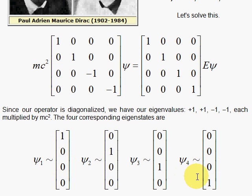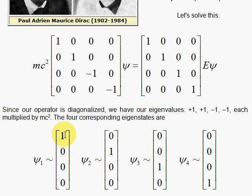These first two have eigenvalues plus 1, and these last two have eigenvalues negative 1. When you put in the constants, the energy eigenvalue for the first two is MC squared, MC squared, and for the last two it's minus MC squared, minus MC squared. So you can see that the particle solutions split into two kinds of particles: one particle with positive energy and one particle with negative energy. The particle with positive energy has two states it can be in: spin up and spin down.